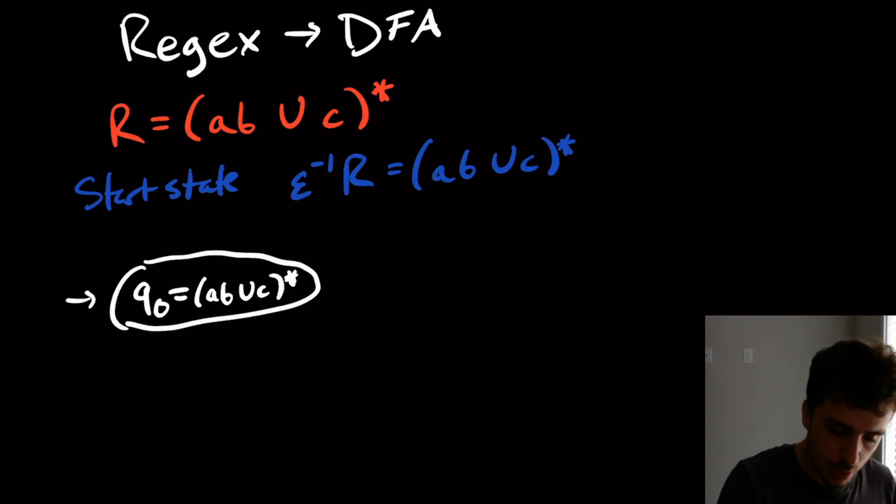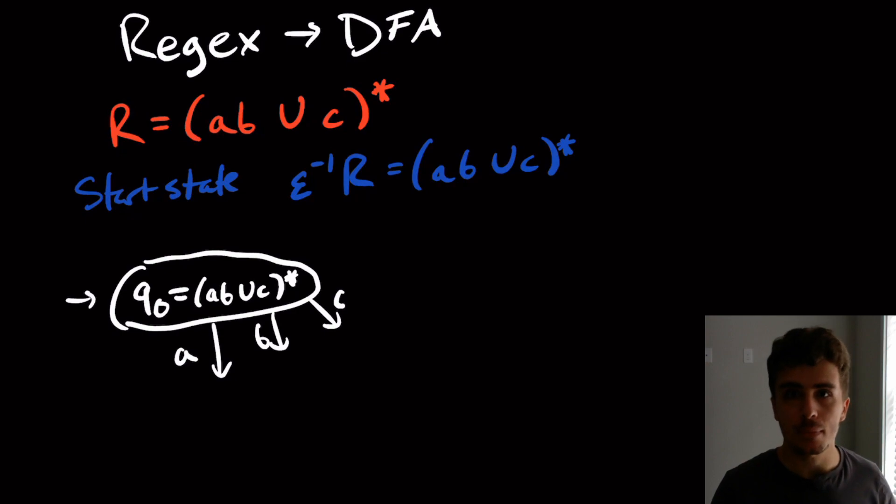I'm going to start building my DFA right here, which is going to be q0, my start state. But I'm actually going to name the state with the actual regex on the inside so we can keep track of what the regex actually is as we're going along. So this is AB union C star. Now we're going to figure out where this state goes on A, where it goes on B, where it goes on C.